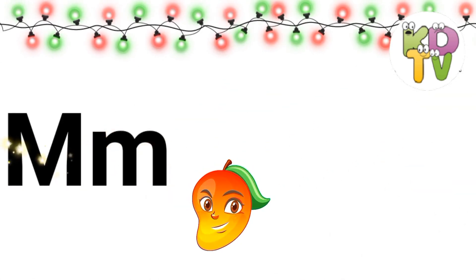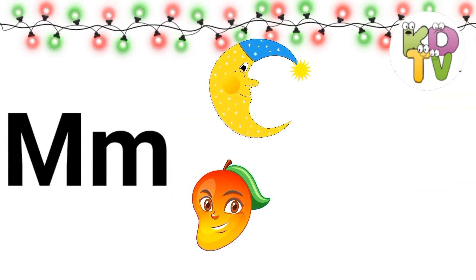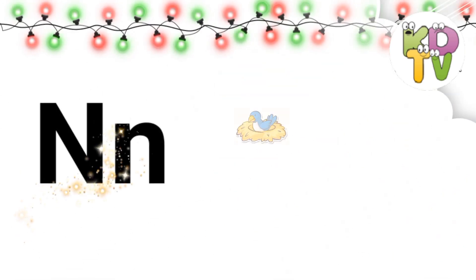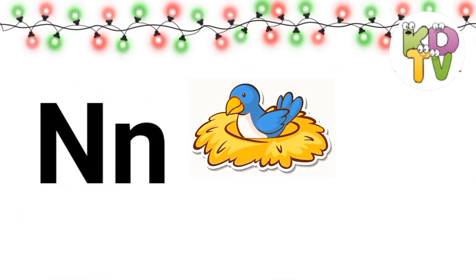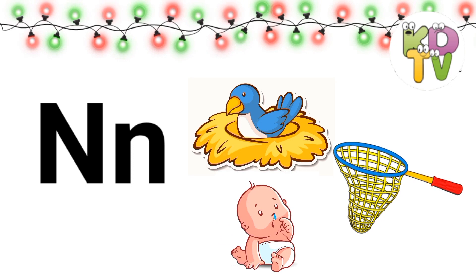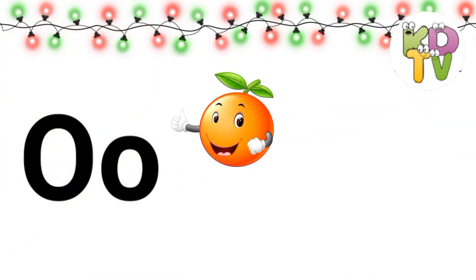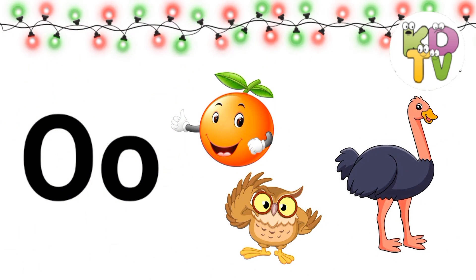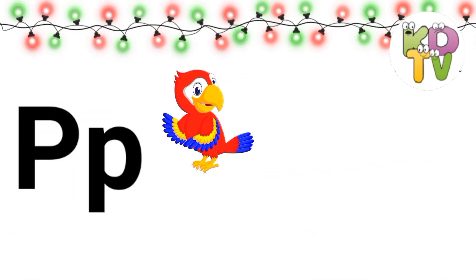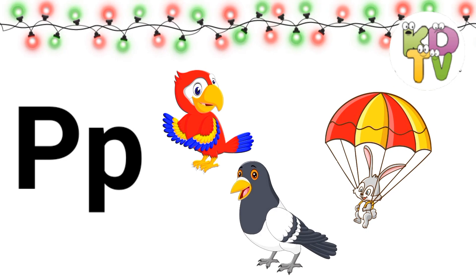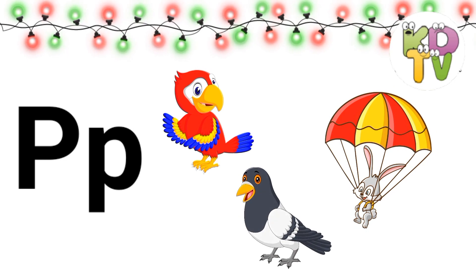M is for Mango, Moon, Magic. N is for Nest, Nose. O is for Orange, Owl, Ostrich. P is for Parachute, Pigeon.